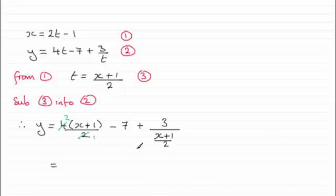So what we've got then, if I expand the bracket at the same time, is 2 times x, that's 2x; 2 times 1, that's 2; and then you've got the minus 7. And multiplying top and bottom here by 2, you've got 3 times 2 which is 6, and that's going to be all over x plus 1.